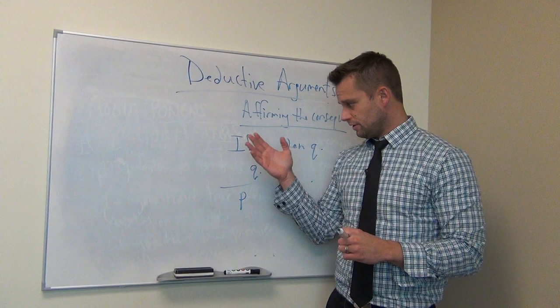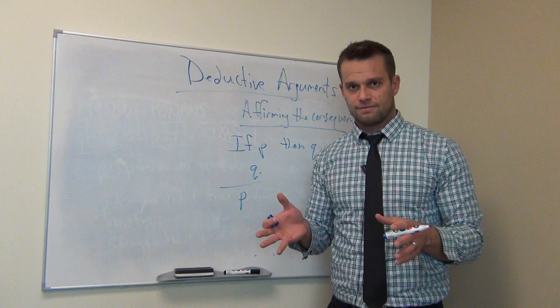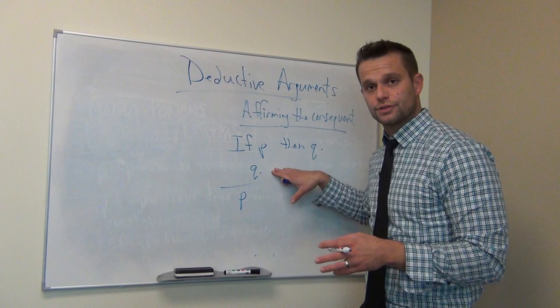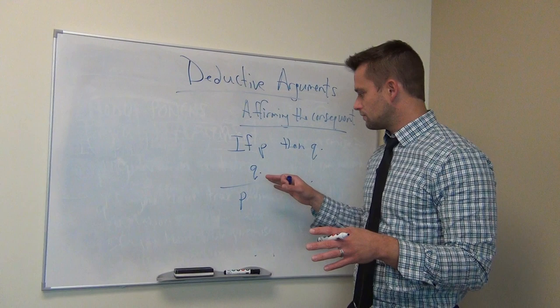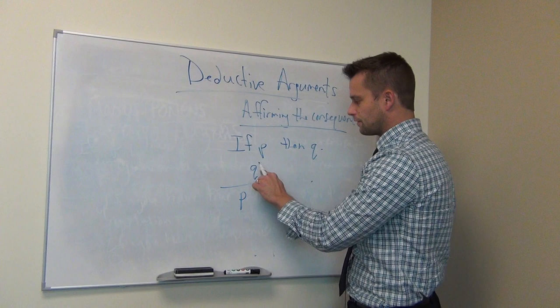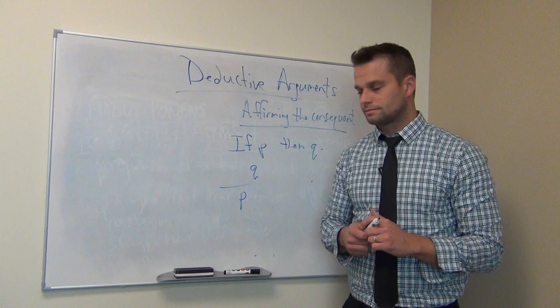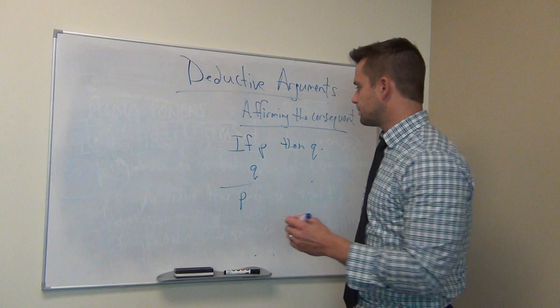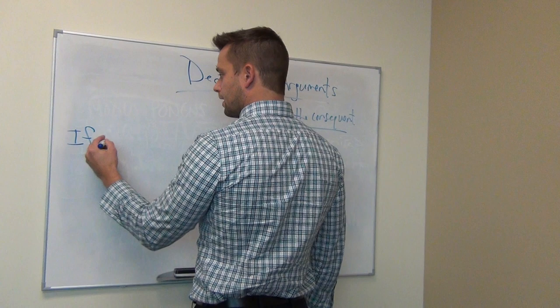The definition of invalidity is that it's possible to have true premises and a false conclusion. To prove that an argument is invalid, you attempt to think of two premises that are true but lead to a false conclusion. Pause and see if you can come up with an example where you plug in actually existing things you know to be true for P and Q, but the conclusion for P turns out to be false.